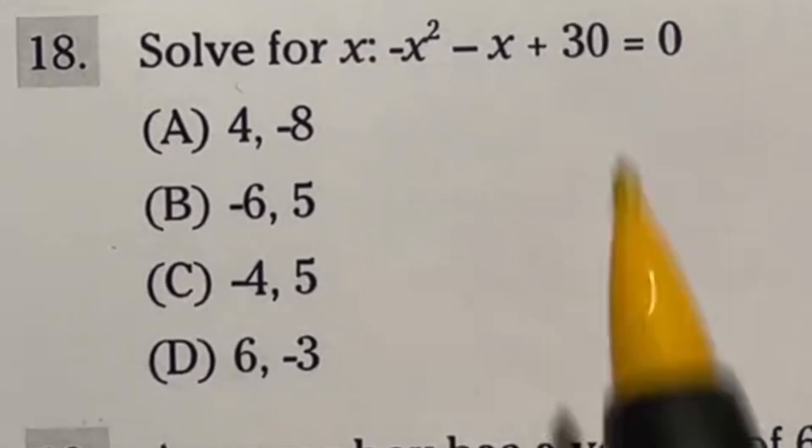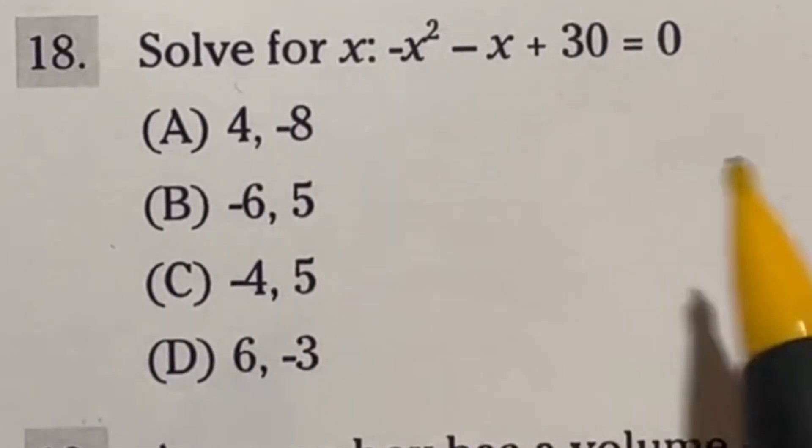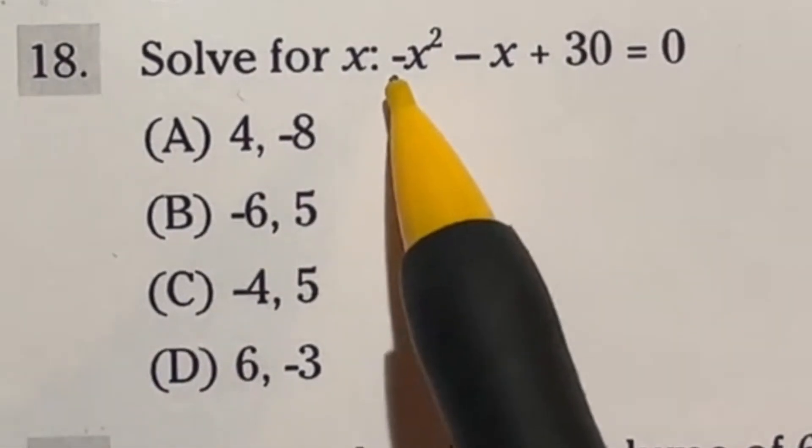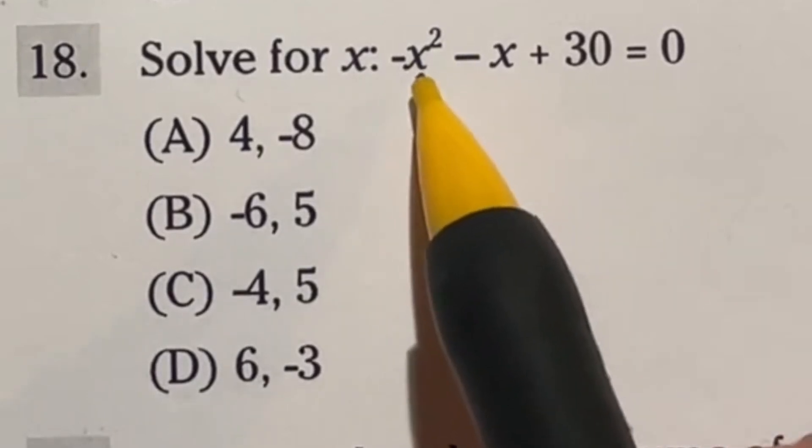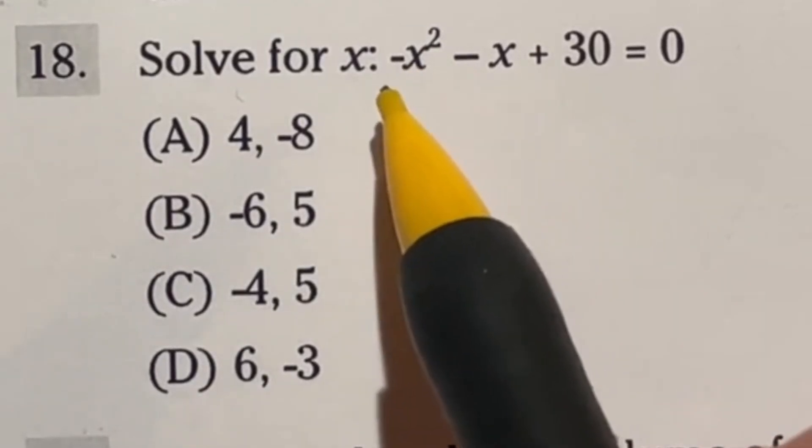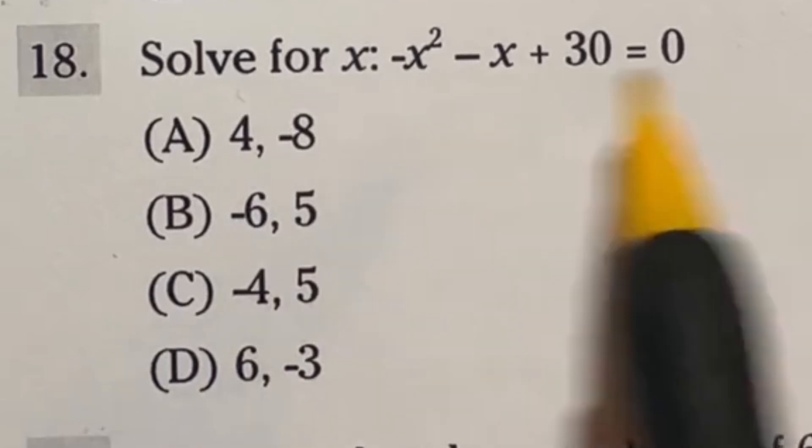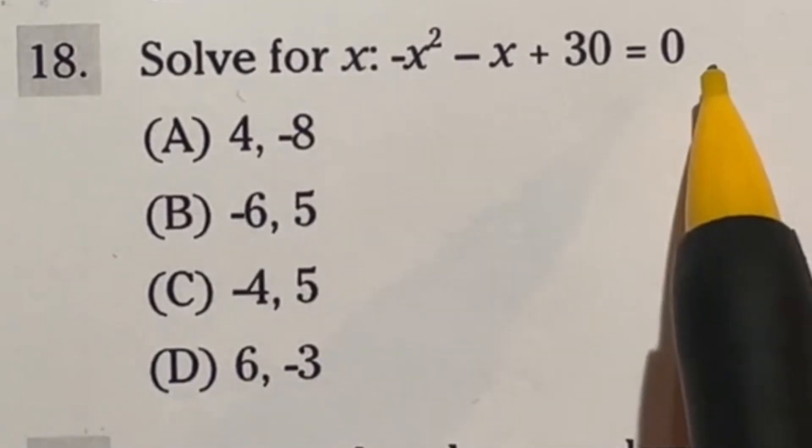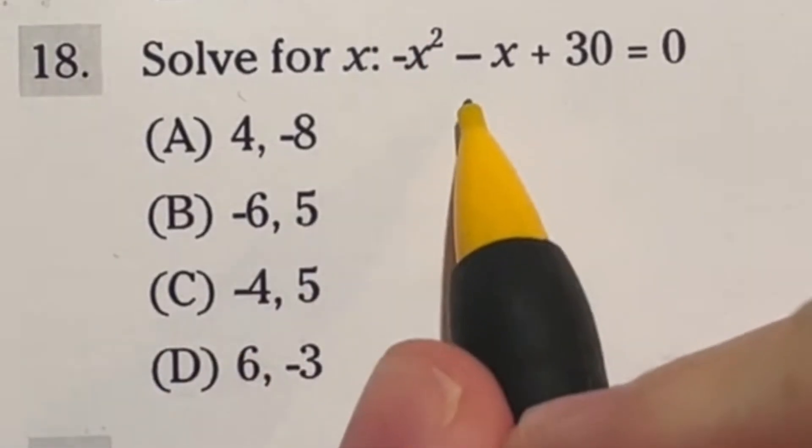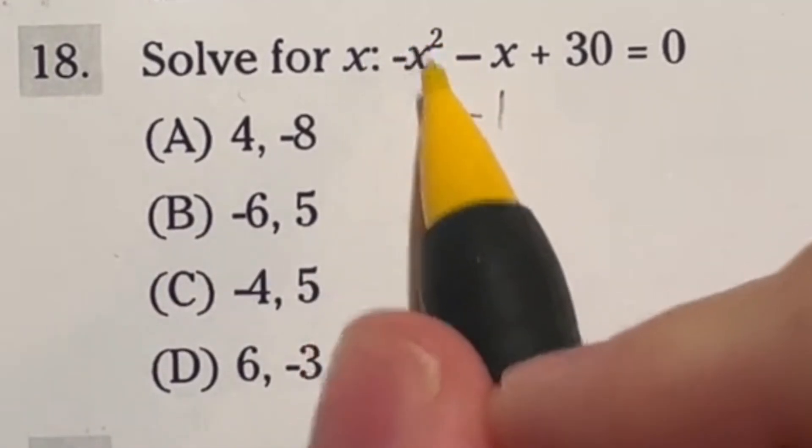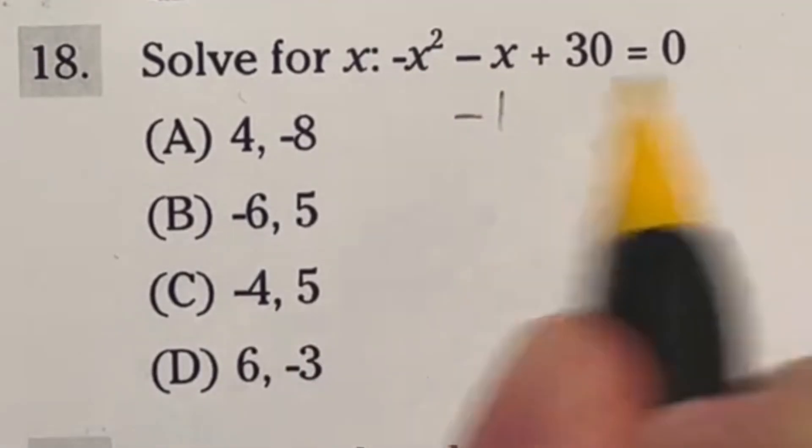For number 18, it wants us to solve this quadratic right here. And if you didn't know, there's extra steps involved if your leading coefficient in front of the x squared is not just like one. In other words, not present. So it has a negative here. Well, guess what? If you do the same thing to both sides of the equation, it's okay. So what I'm going to do is multiply the whole thing by negative one right off the bat, because it's going to eliminate this negative right here. So if I multiply everything by negative one, that makes this x squared plus x minus 30 equals zero.